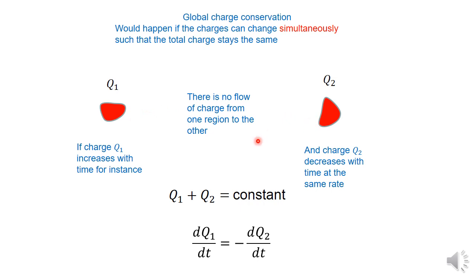This is what would be called global charge conservation. And these things have to happen simultaneously, because if it's not simultaneous, then the total amount of charge won't be constant at every point in time.